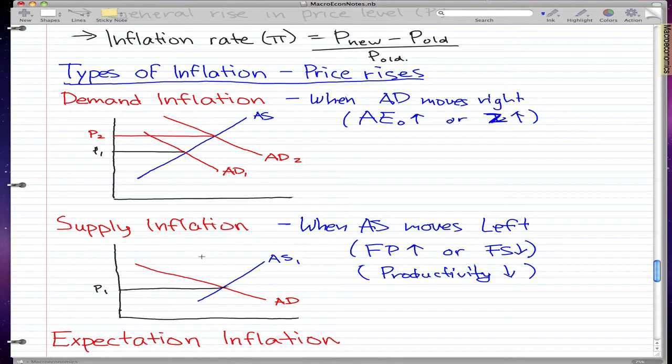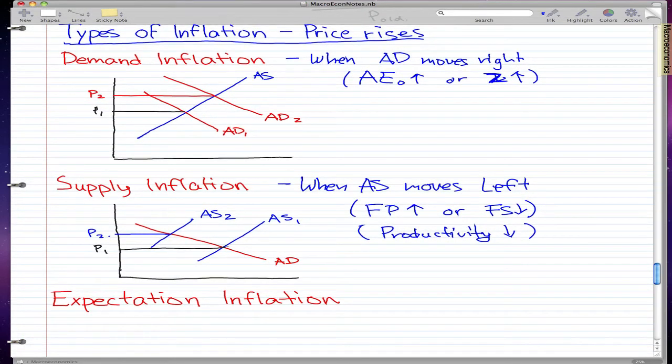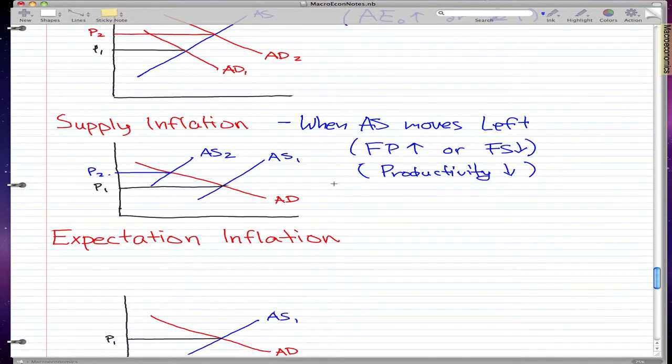In this case, aggregate supply moves left. So we move our aggregate supply left to AS2, and our new price is again higher because of this inflation occurrence. The last type of inflation I'm going to talk about is expectation inflation.